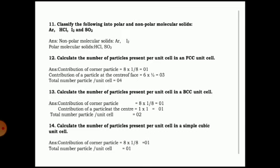Calculate the number of particles per unit cell in an FCC unit cell — this type of question is repeatedly asked in final examinations. Contribution of corner particles: 8 × (1/8) = 1. Contribution of face-center particles: 6 × (1/2) = 3. Total number of particles per unit cell = 4. You must show this calculation to earn two marks; writing only the answer earns one mark.